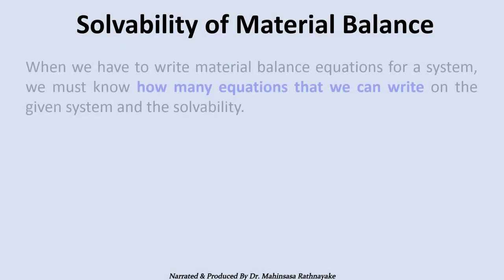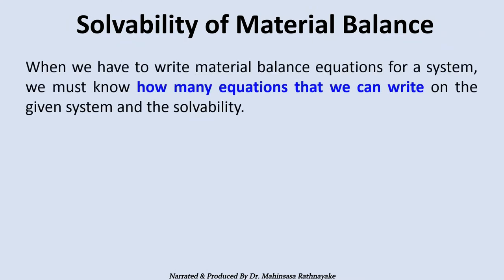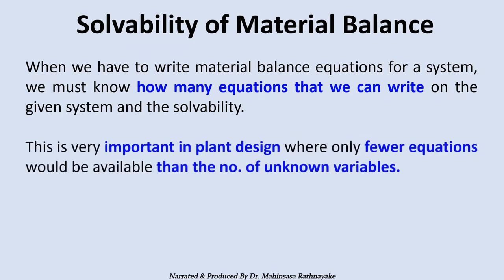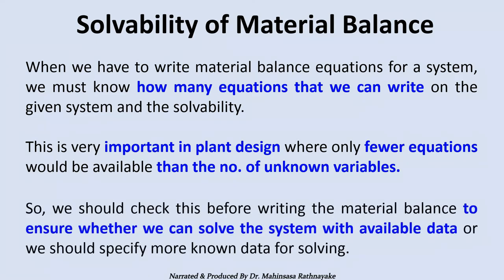When we have to write material balance equations for a system, we must know how many equations that we can write on the given system and the solvability of the system. This is very important in plant design, where only fewer equations would be available than the number of unknown variables. So we should check this before writing the material balance to ensure whether we can solve the system with available data or we should specify more known data for solving.